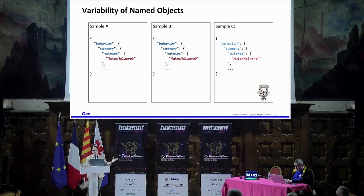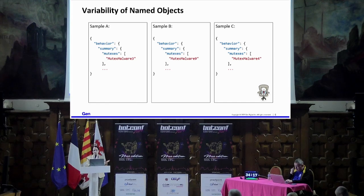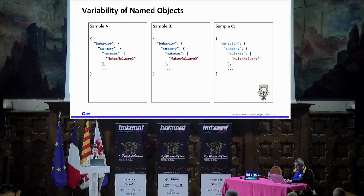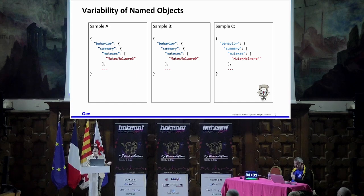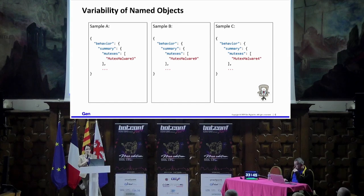Here's a simple example I created randomly, showing that named objects, files, and similar artifacts are usually created by some algorithm with a fixed part and a random part generated based on the operating system, version, username, and so on. Here, the only variant part is the suffix — the number at the end. We want to detect these similarities and create a regular expression covering all these samples and potentially future variants, while avoiding false positives so we don't detect clean samples.